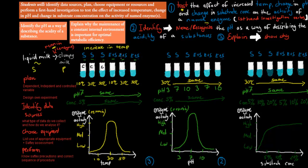We also have different dependent and independent variables. The dependent variable is something we measure — in this case, we measure enzyme activity by seeing how long it takes for the different test tubes to go clumpy. The independent variable is what we change: if we're measuring temperature, we change the temperature; if we're measuring pH, we change the pH; if we're measuring substrate concentration, we change the substrate concentration.